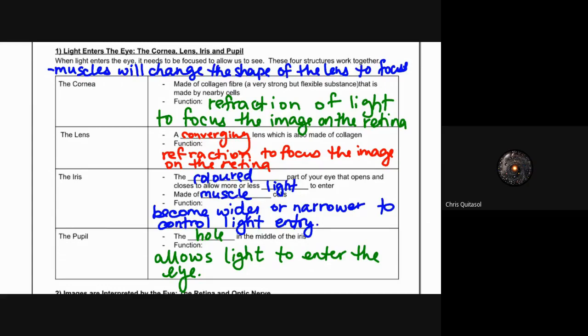The lens is a converging lens which is also made of collagen, and its main goal is to refract and focus the image right on the retina. So there's two components of refraction that go on - one through the cornea and then one through the lens. The lens is really the one that's going to try to get that image focused on the retina. The iris is the colored part of your eye and it opens and closes to allow more or less light to enter the human eye.